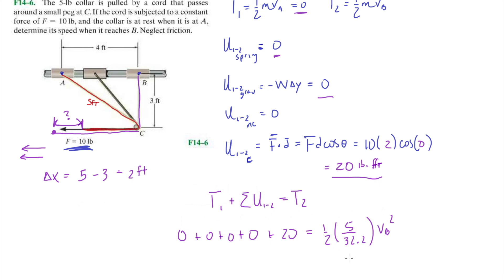Happens all the time where that's like the one problem, that's the one mistake you make taking the whole test, and it costs you your A plus. 20 times 2, times 32.2 divided by 5, divided by whatever else, and you end up with VB, 16.05, feet per second. Oops, just feet per second. All right, and that's it.